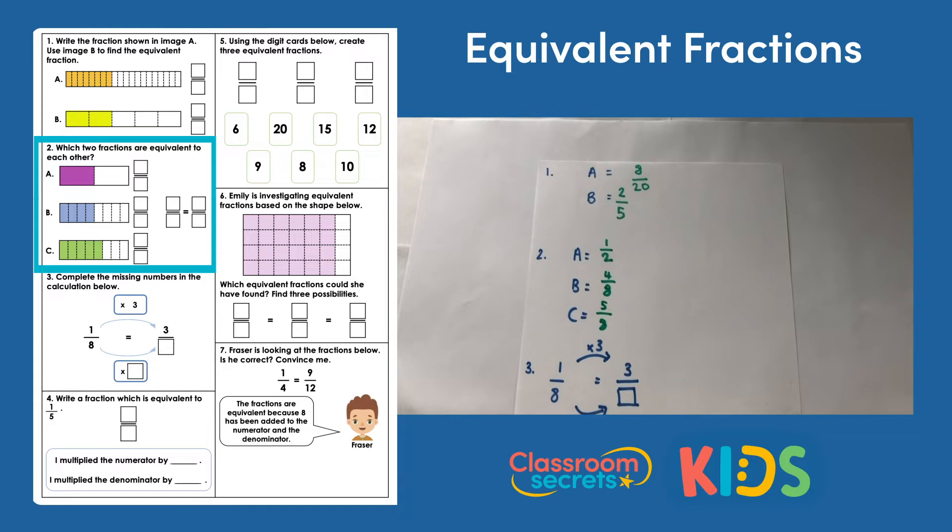Now our two that are equivalent, so the two that represent the same proportion of a shape, are going to be A and B. We can show that by writing 1 half equals 4 eighths. We can check that by applying the rule that we looked at. If I multiply my numerator here by 4 I'll get 4, and if I multiply my denominator by 4, 2 times 4 is 8.